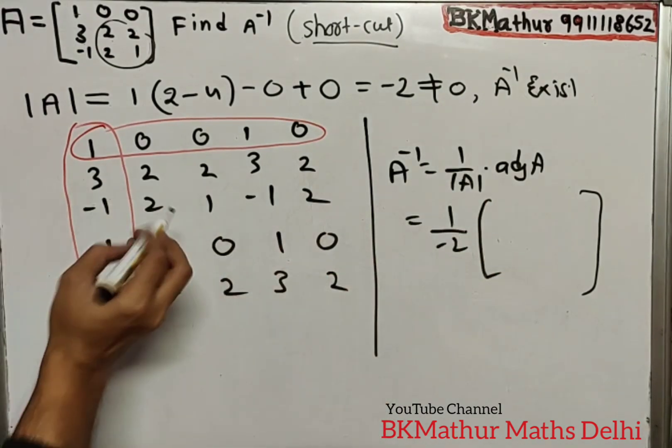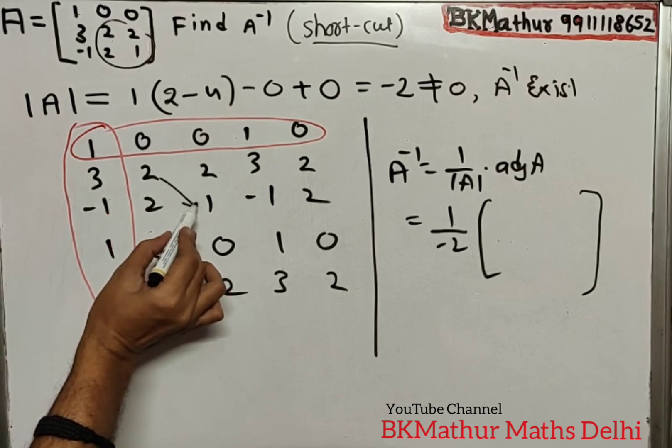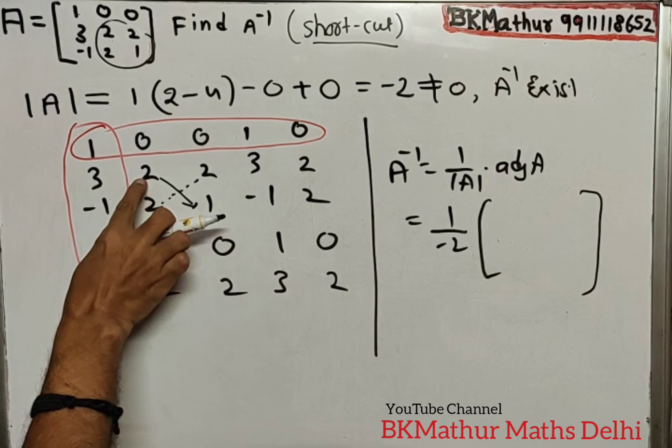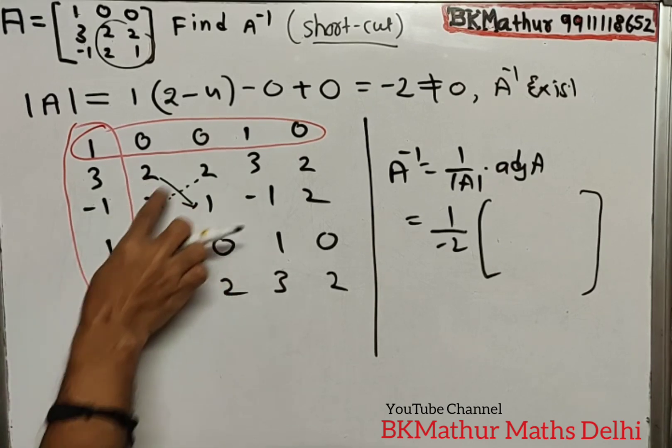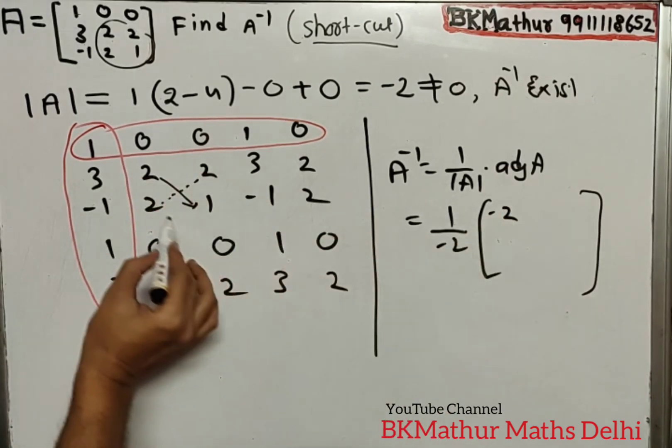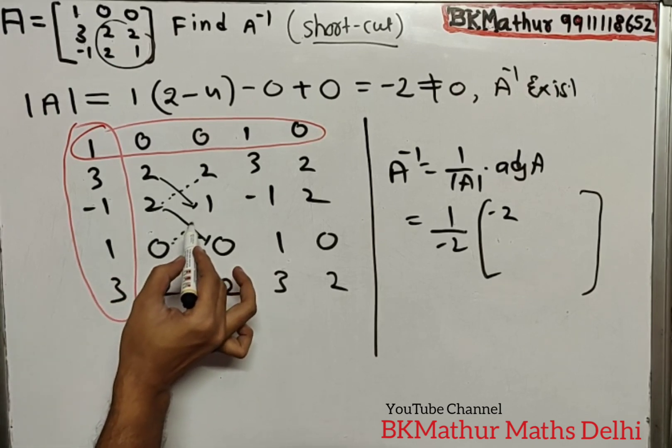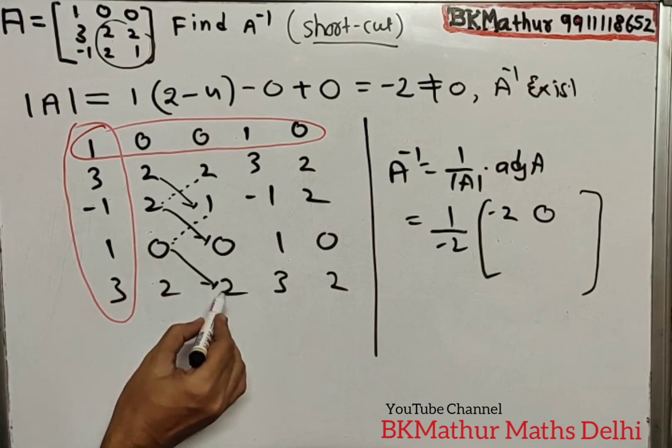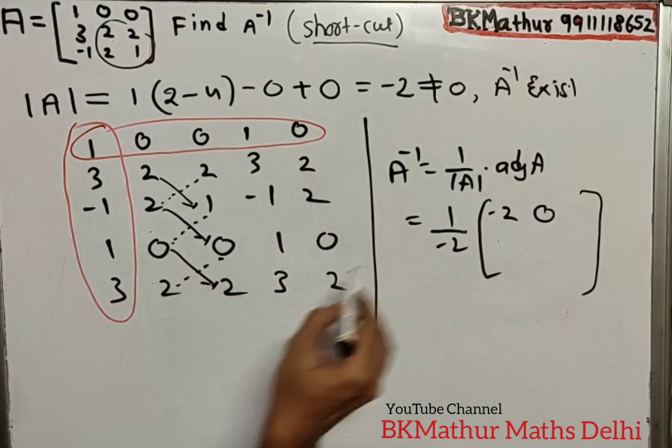Now carefully, this multiply diagonal-wise: 2×1 is 2, 2×2 is 4, 2×1 is 2 minus 2×2 is 4, you get -2. Next, this multiply: 2×0 is 0 minus this multiply, everything is 0. This multiply: 0×2 is 0. This multiply: everything is 0.